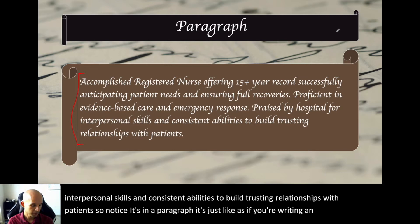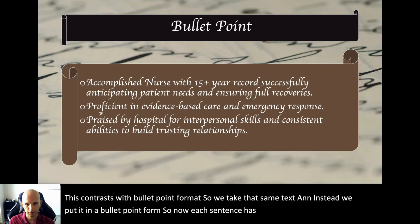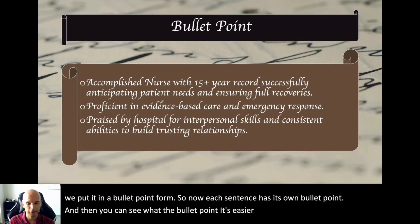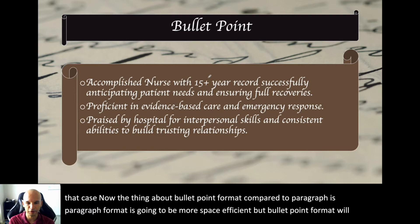Notice it's written in a paragraph, just like an essay. This contrasts with bullet point format, where you take that same text and put it into bullet point form so each sentence has its own bullet point. With bullet points, it's easier to speed read. The thing about bullet point format compared to paragraph is paragraph format is going to be more space efficient, but bullet point format will be easier to read.